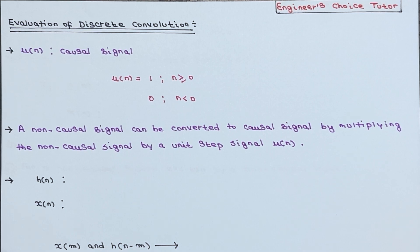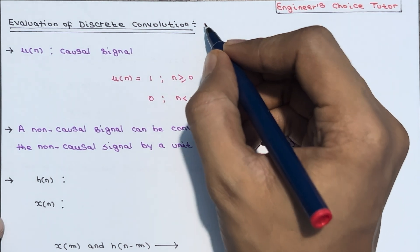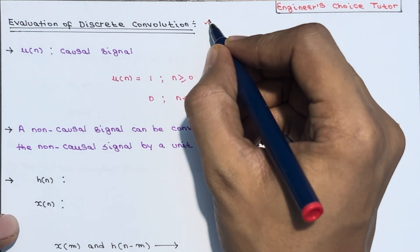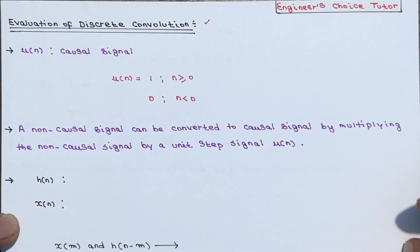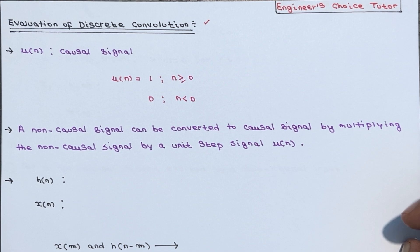Hi everyone. In this lecture we will talk about evaluation of discrete convolution. The convolution sum can be easily implemented to obtain closed form results if x(n) and h(n) have simple analytical expressions.